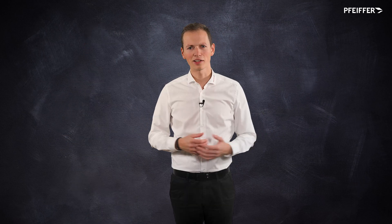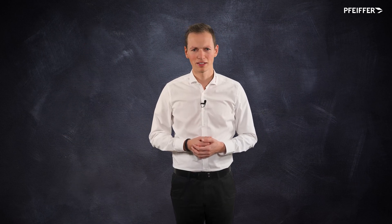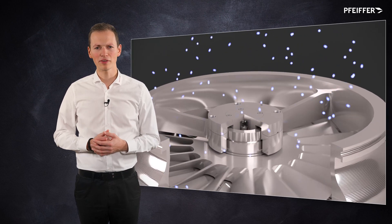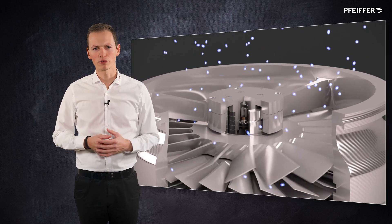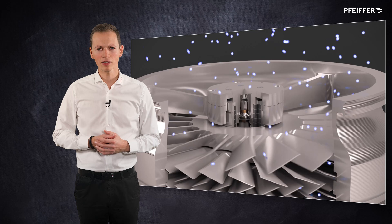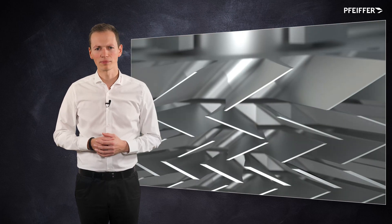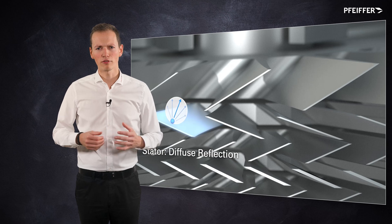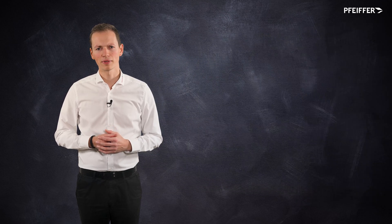Let's take a closer look at the compression ratio for turbo pumps. The pumping action of a turbo pump is based on the fact that more gas particles flow from the high vacuum side to the fore vacuum side than the opposite way around. This is achieved by the acceleration of particles by the fast rotating rotor plates.